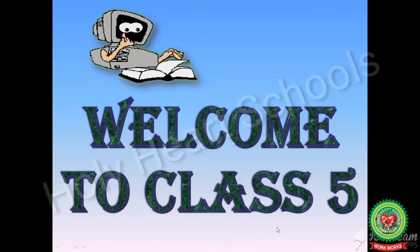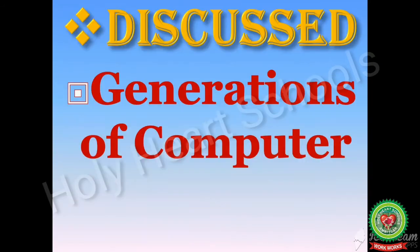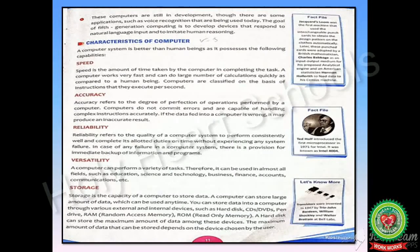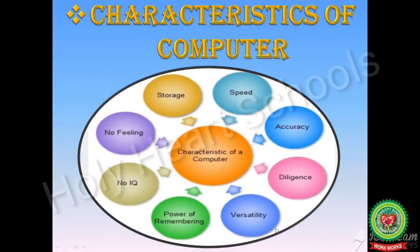Hello children, welcome to computer class. Today we are going to continue the same chapter — chapter number one, evolution of computer. In the last class we discussed generations of computer. Our today's objective is to learn about characteristics of computer and limitations of computer. Open your book at page number 11. Let us start with the first topic of the day: characteristics of computer. A computer is better than human beings as it possesses the following capabilities.